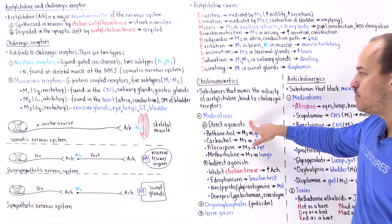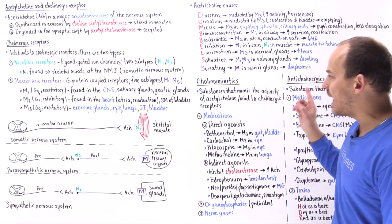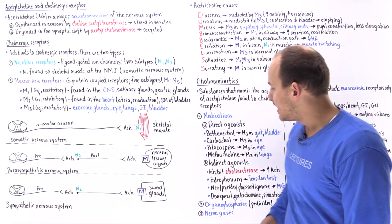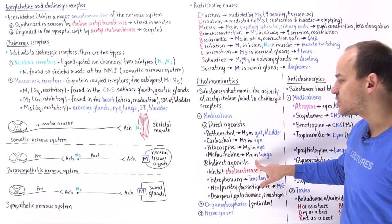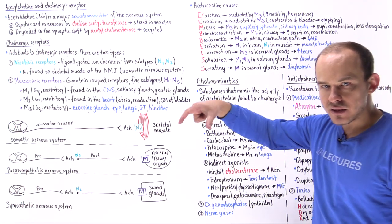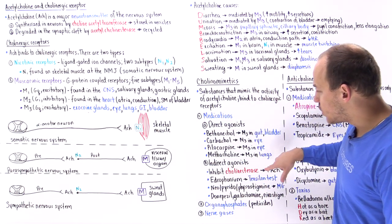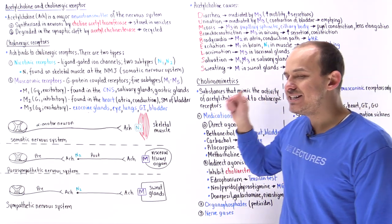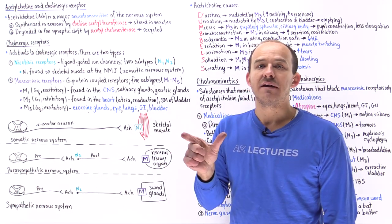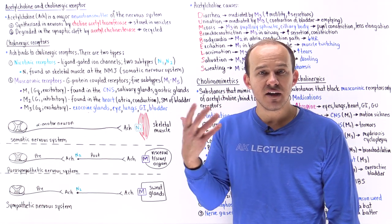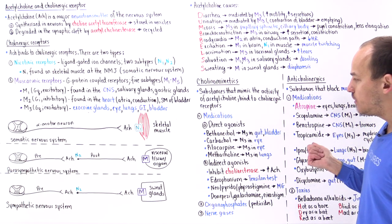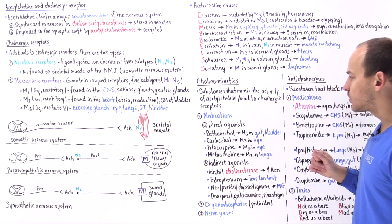Direct agonist means the medication binds directly to the acetylcholine receptor, thereby stimulating it. Indirect agonists work differently — they work on the cholinesterase enzyme in the cleft that breaks down acetylcholine. They bind onto cholinesterase, decrease its activity, and that increases levels of ACh in the cleft, making more ACh available to bind onto cholinergic receptors. That's why we call them indirect — they work through cholinesterase.